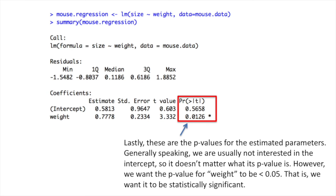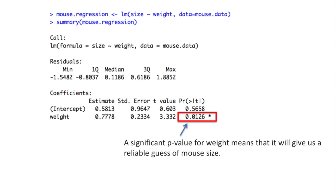Lastly, these are the p-values for the estimated parameters. Generally speaking, we are usually not interested in the intercept, so it doesn't matter what its p-value is. However, we want a p-value for weight to be less than 0.05. That is, we want it to be statistically significant. A significant p-value for weight means that it will give us a reliable guess of mouse size.